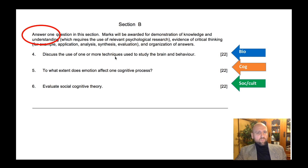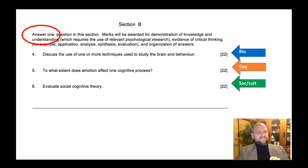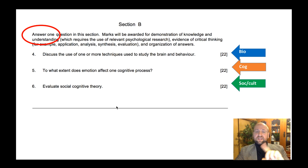For example: 'Discuss use of one or more techniques to study the brain' — you might discuss fMRI, how and why it's used, a couple of studies, but then discuss limitations. 'To what extent does emotion affect one cognitive process' — you'd explain how emotion affects the cognitive process with one or two studies, but then the 'to what extent' part requires counter-arguments. 'Evaluate social cognitive theory' — explain the theory with studies, then introduce limitations and counter-arguments.